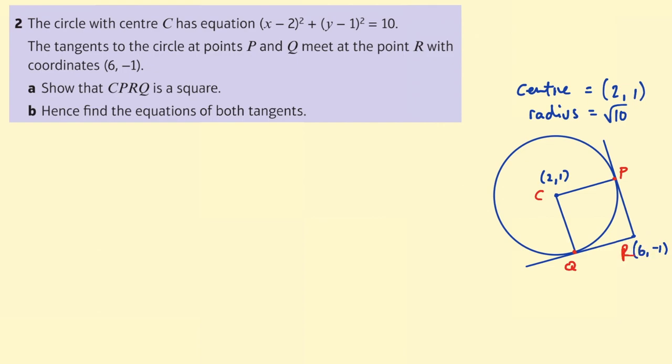We've got our sketch and now we need to show this as a square. So how can we do this? Well what are the features of a square? All of the edges meet at 90 degrees and all of the edges are equal in length. We know the radius has a length of √10. How could we find the length of that other edge QR or PR? Well we know the tangent meets the radius at 90 degrees.